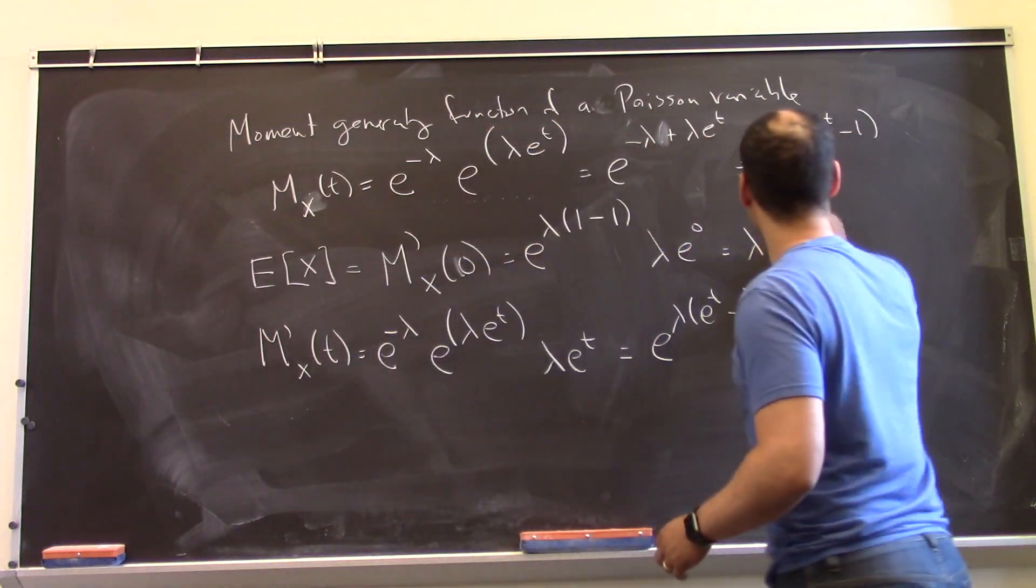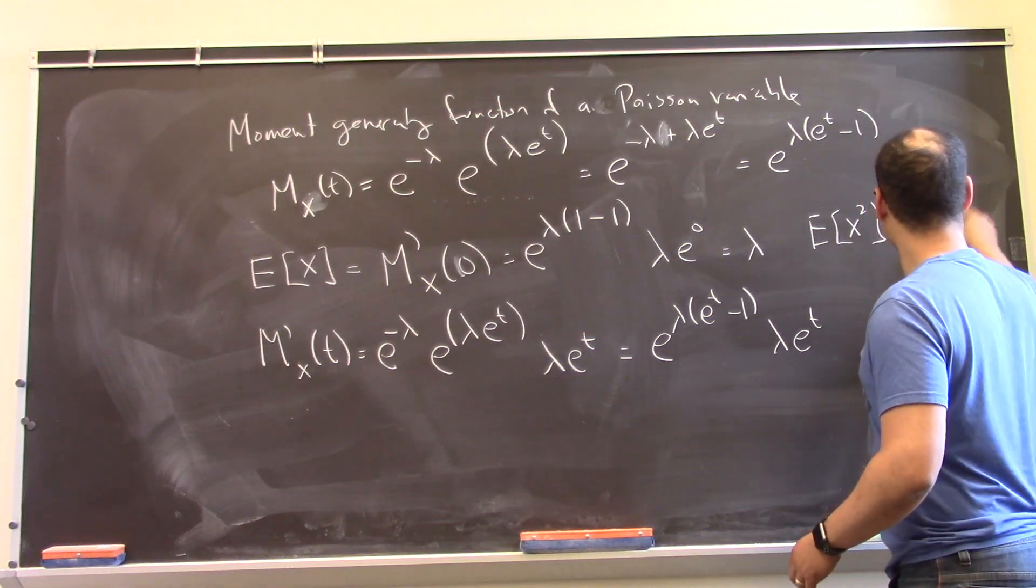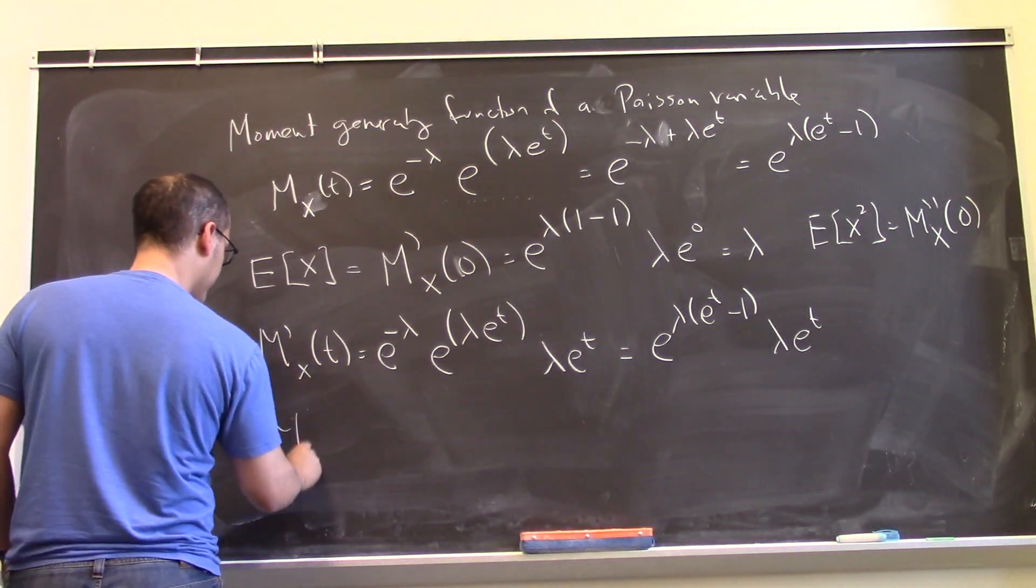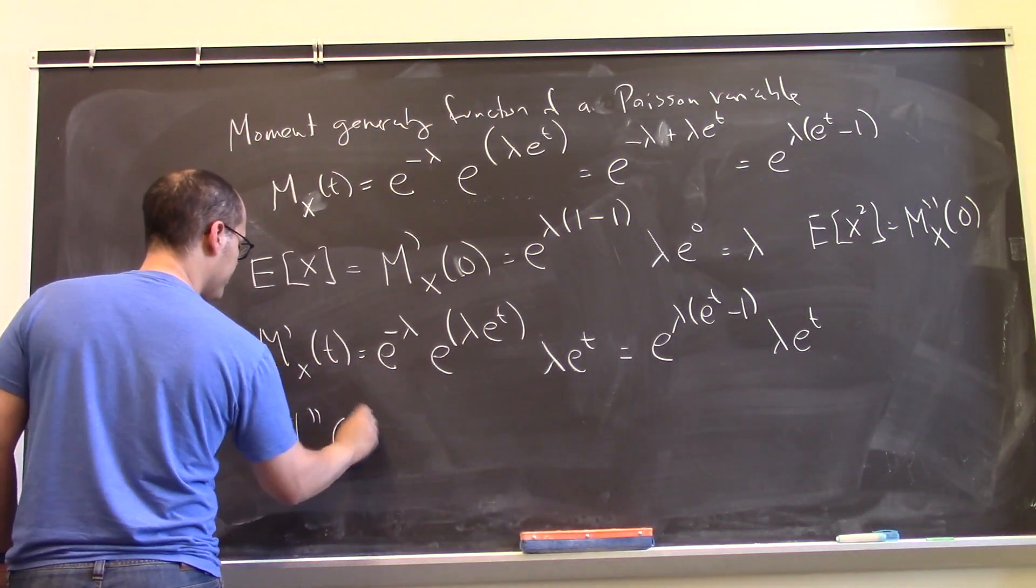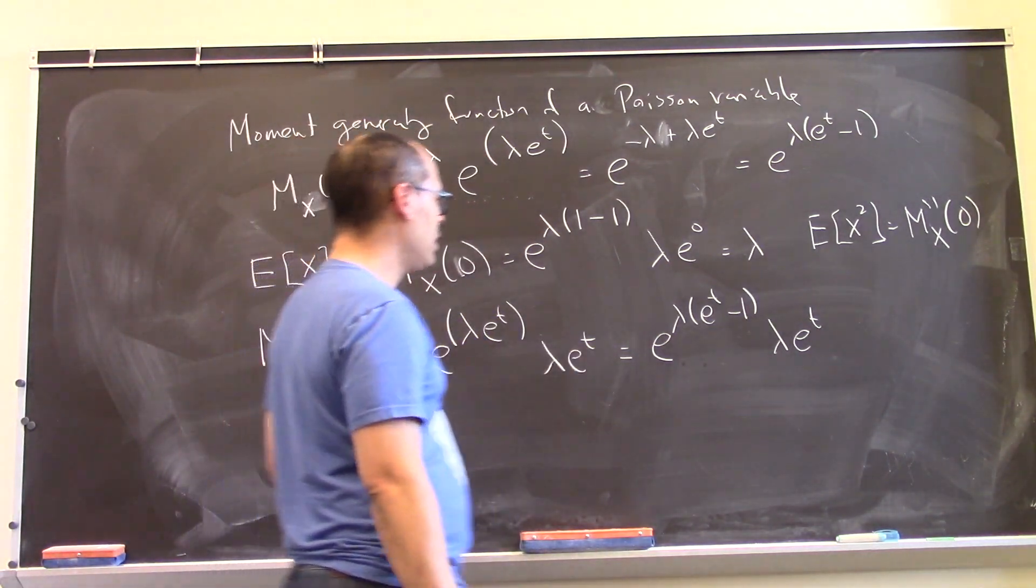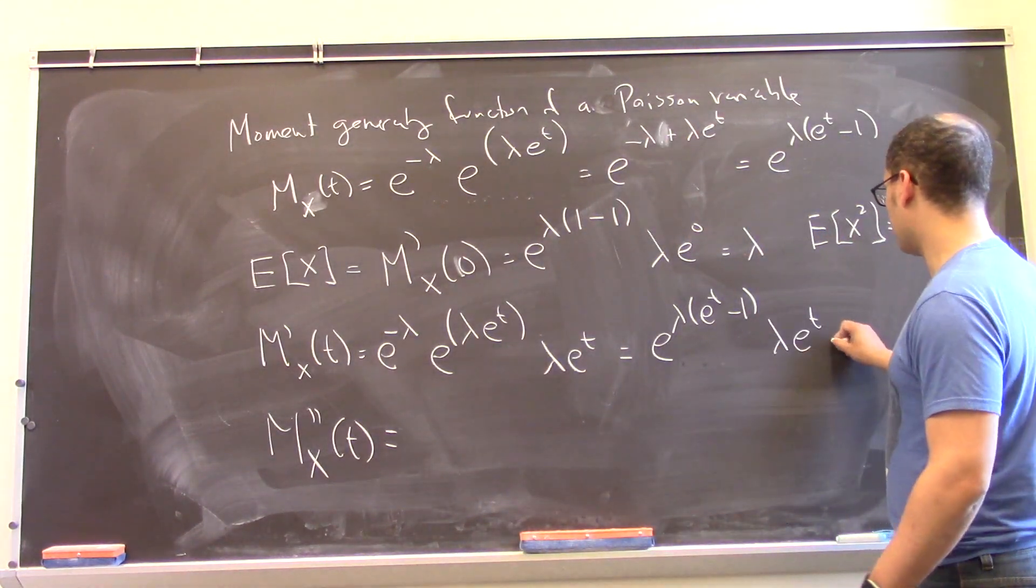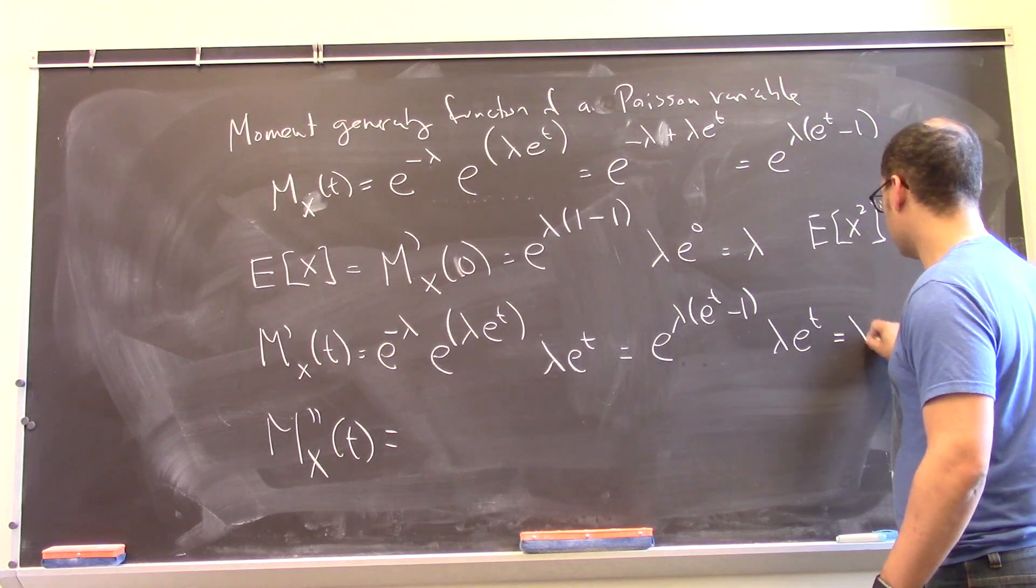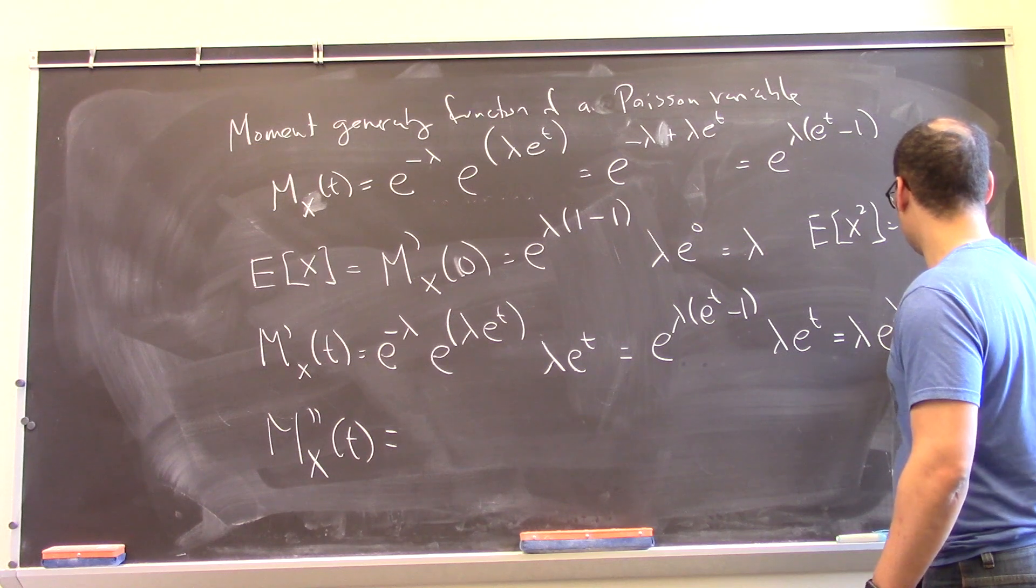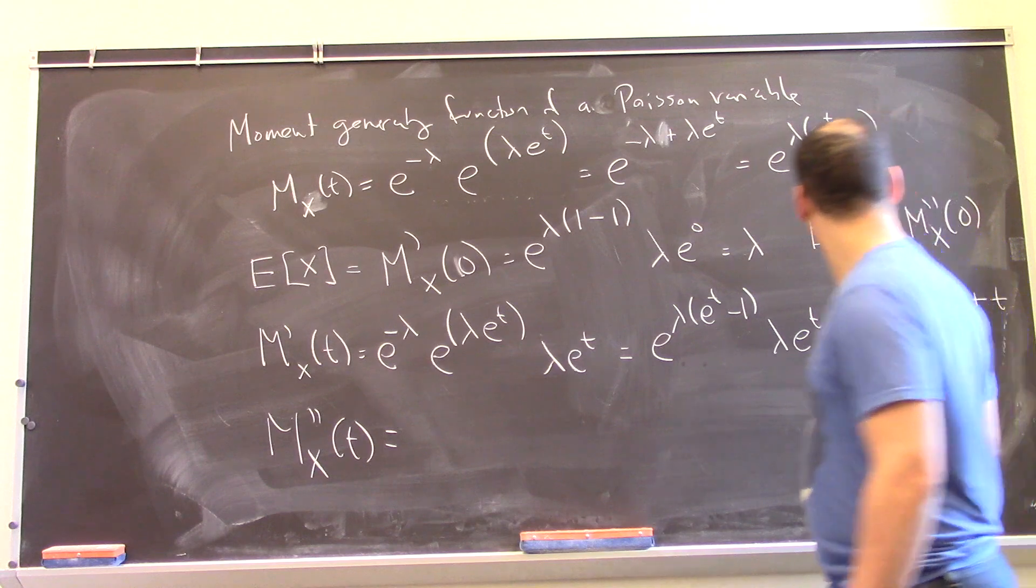But let's work out the expected value of x squared next, which is going to be the second derivative evaluated at 0. Okay, so let's go ahead and take the second derivative. Okay, so let me work with this expression. I guess, why don't I bring this thing together so I don't have to use the product rule. So I have lambda e to the lambda e to the t minus 1 plus t. That's what this thing looks like.